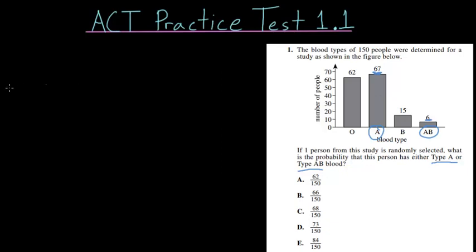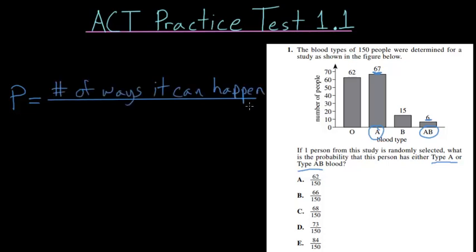In general, when dealing with probability questions like this, you need to think of probability as a type of ratio or fraction. So the probability of something happening is equal to a fraction where the numerator is the number of ways that your event can happen and your denominator is the total number of outcomes.